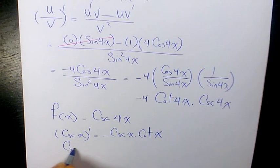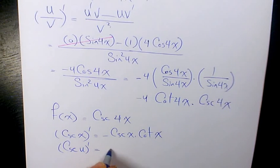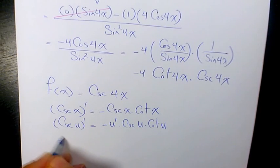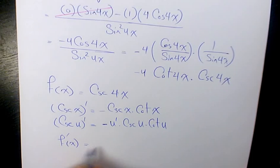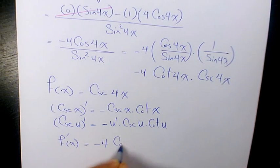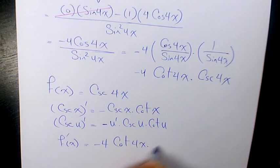And the derivative of cosecant u, which u is a function of x, is negative u prime times cosecant u times cotan u. So that's going to be f prime x is negative 4 cotan 4x times cosecant 4x. That's exactly what you see here.